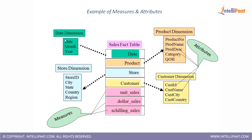When we say dimension, it is nothing but your table where you have description columns. The fact table is the one with your numerical values — all the numerical measures like sales, profit, and discount. All this information like profit ratio would be stored in your fact table. Entry columns in your table are known as attributes, whereas numerical columns are known as measures. Measures are columns on which you can perform aggregations — you have sales and you can perform sum of sales, minimum of sales, or maximum of sales. Columns on which you can perform aggregations, or numerical columns, are your measures.